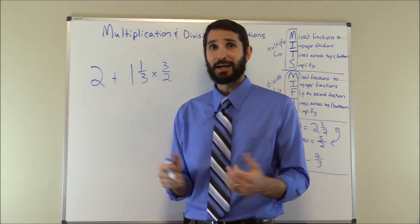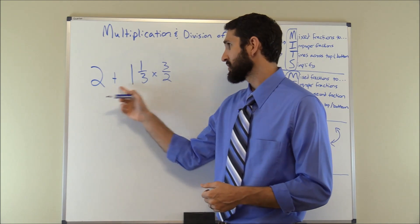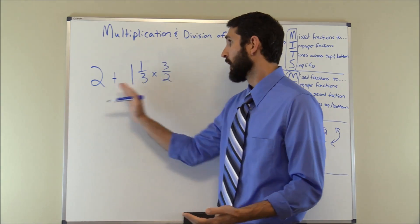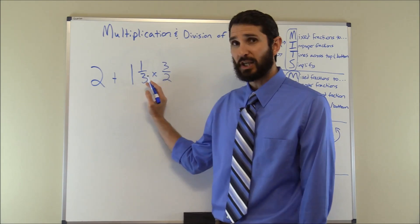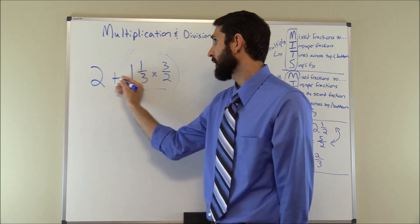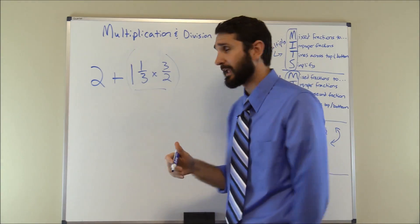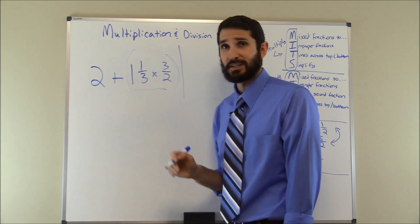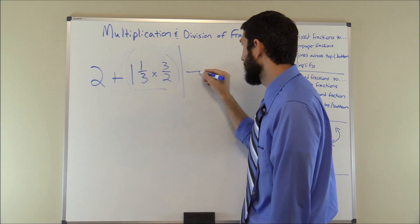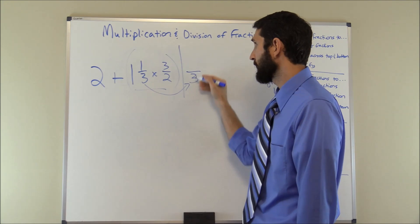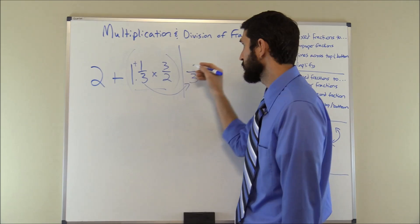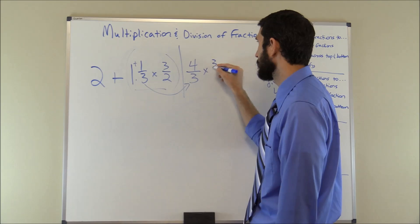For our next problem: two plus one and one third times three over two. This is trickier because we have both addition and multiplication. We follow the order of operations — multiplication comes before addition, so we ignore the addition part and solve the multiplication first. Following MITS, we convert the mixed number one and one third: the denominator carries over as three, and three times one plus one equals four, giving us four over three. Three over two is already an improper fraction, so we carry it over.